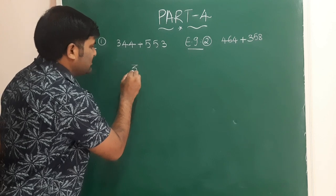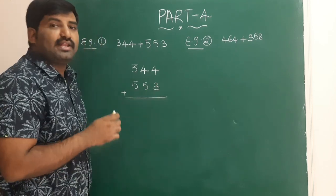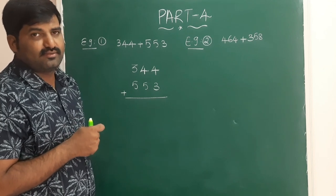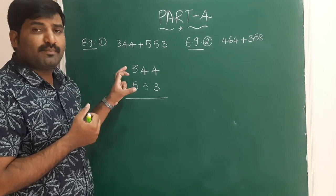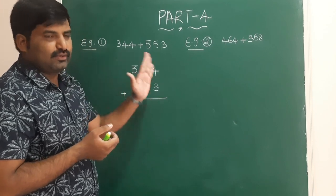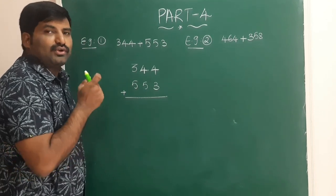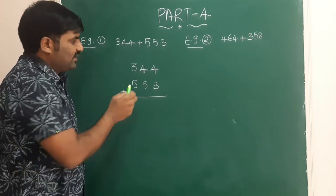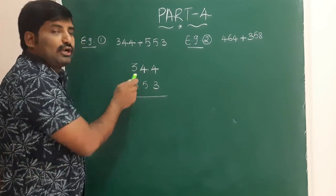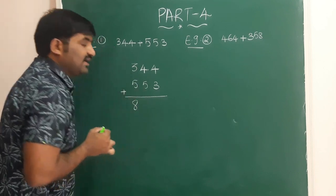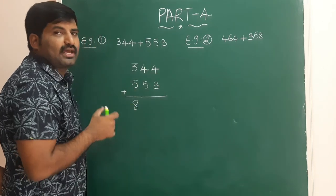First example: 344 plus 553. When you add these digits you will get non-carry numbers. In Vedic math we add from left to right. First, 3 plus 5 is 8. Before writing 8, keep it in mind and check the next two digits: 4 plus 5. Is it carry or non-carry? It is non-carry. Since the next pair is also non-carry, you can write 8 directly.